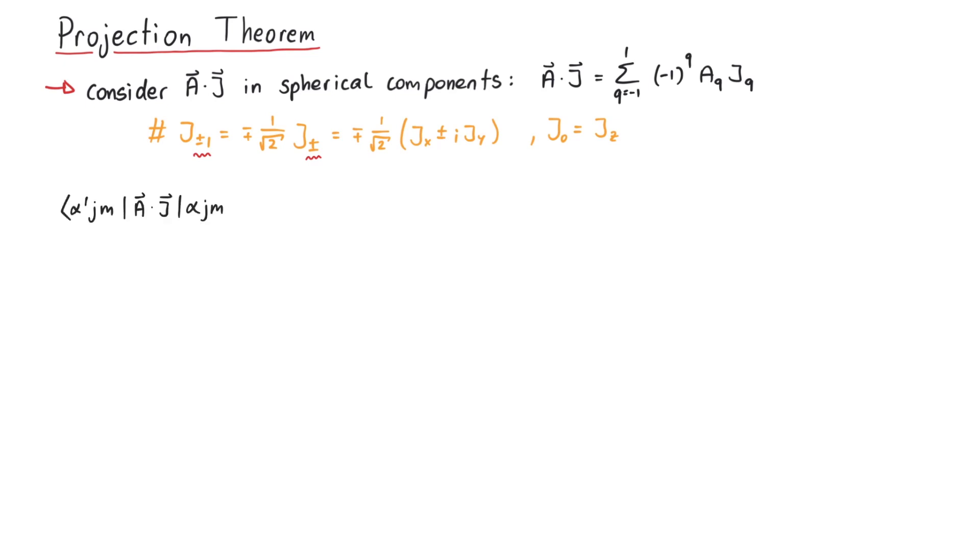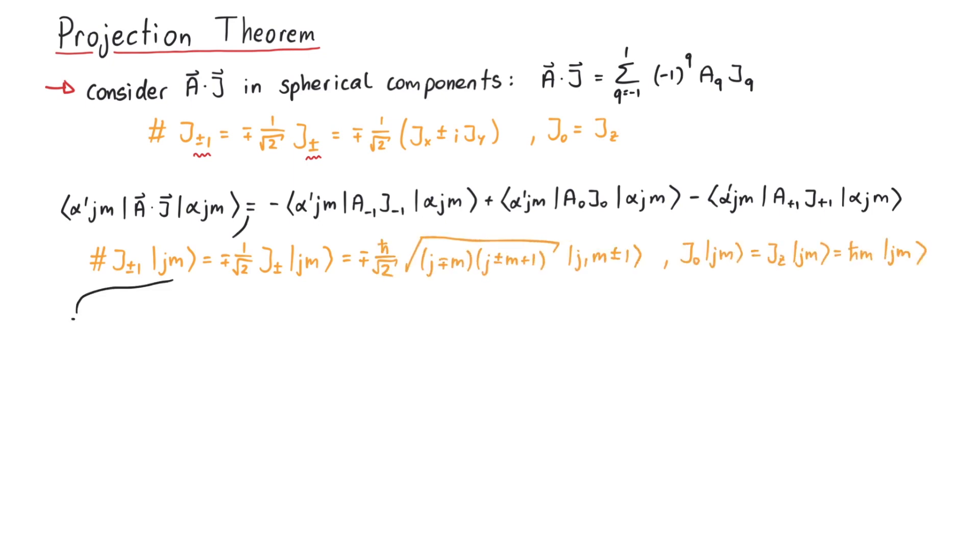Now we can calculate the matrix element of A times J, where we separate into spherical components. After applying the ladder operators onto the states with certain J and M, we get three terms.